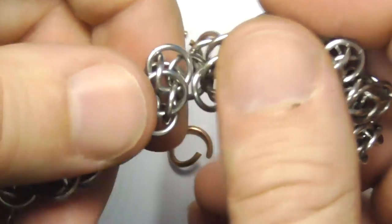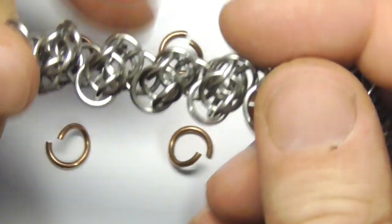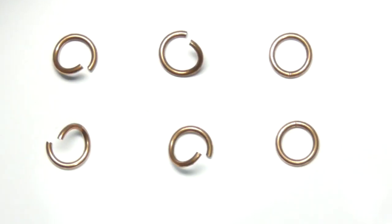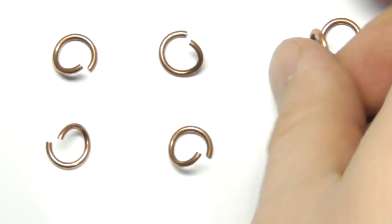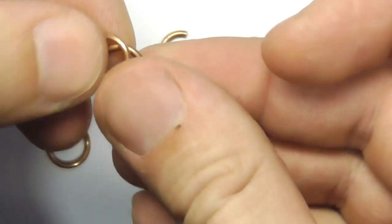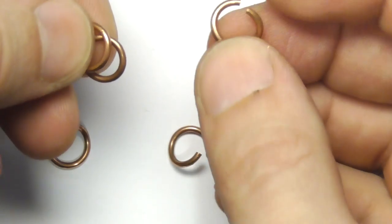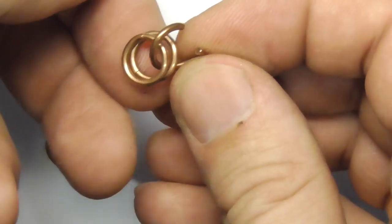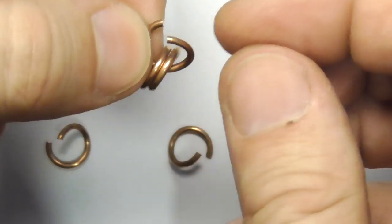Let's start with making units and after that I will show you how to connect them in the right way. So for each unit we will need 4 open rings and 2 closed rings. Let's take two closed rings, let's take one open ring, let's put closed rings on the open one and now let's close the ring.